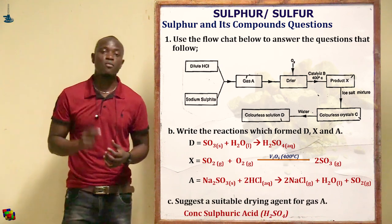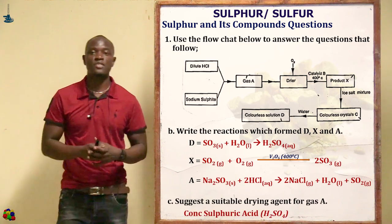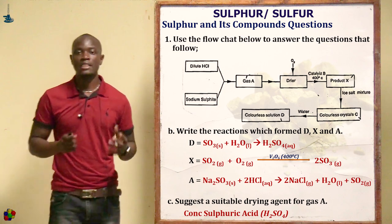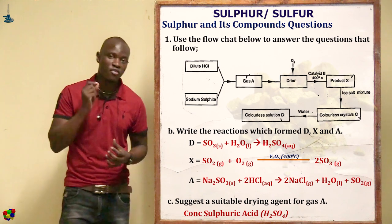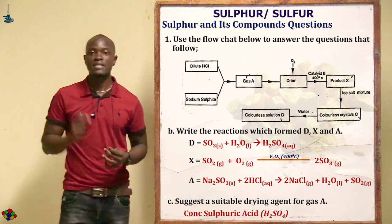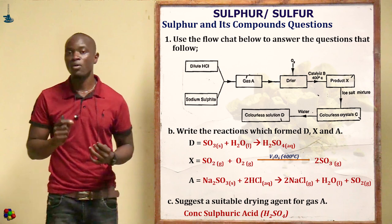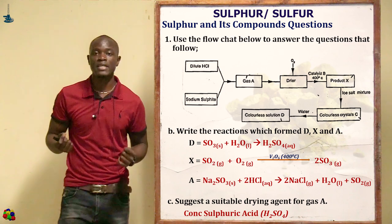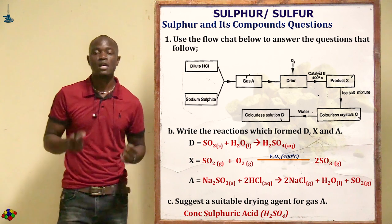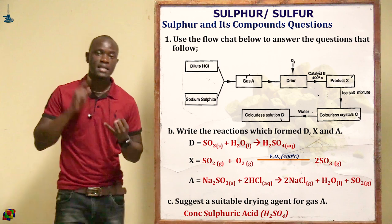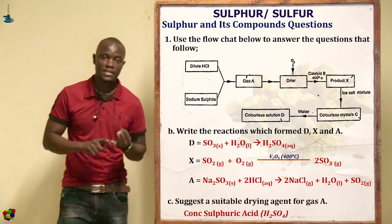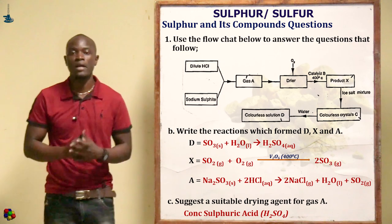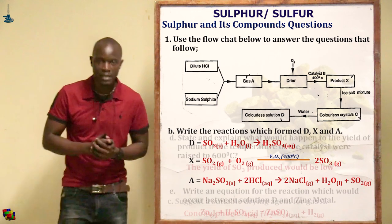The next part asks for a suitable drying agent for gas A, which is sulfur dioxide. A suitable drying agent is concentrated sulfuric acid, used to remove traces of water vapor from gas A.